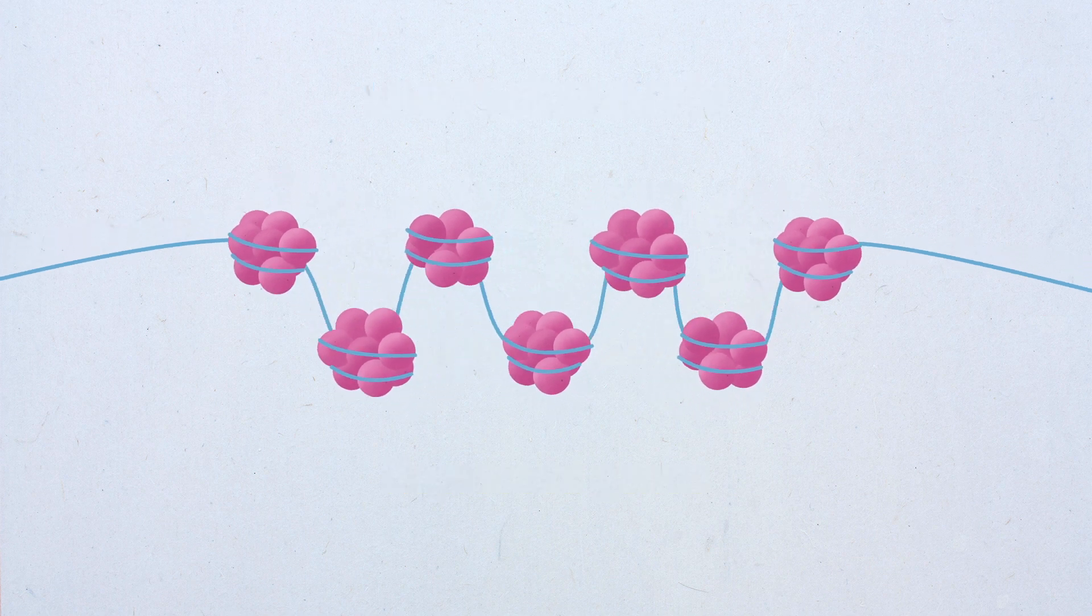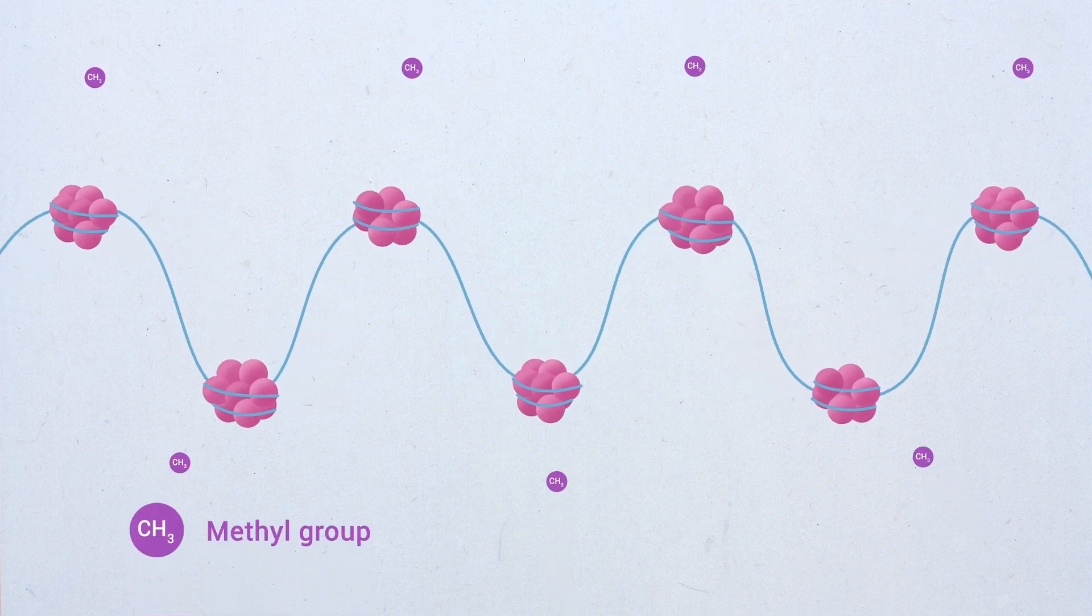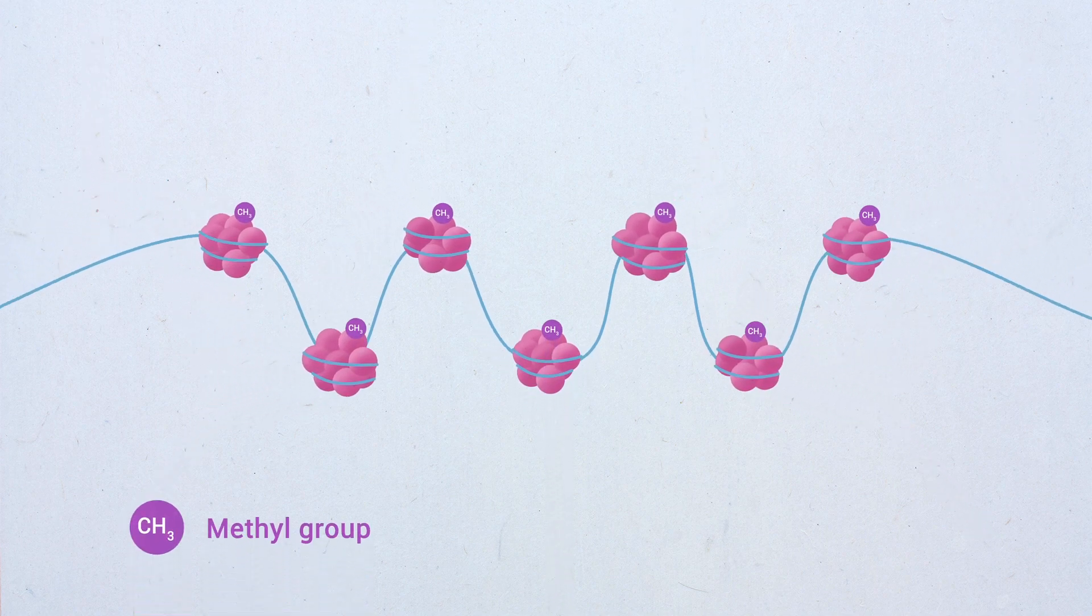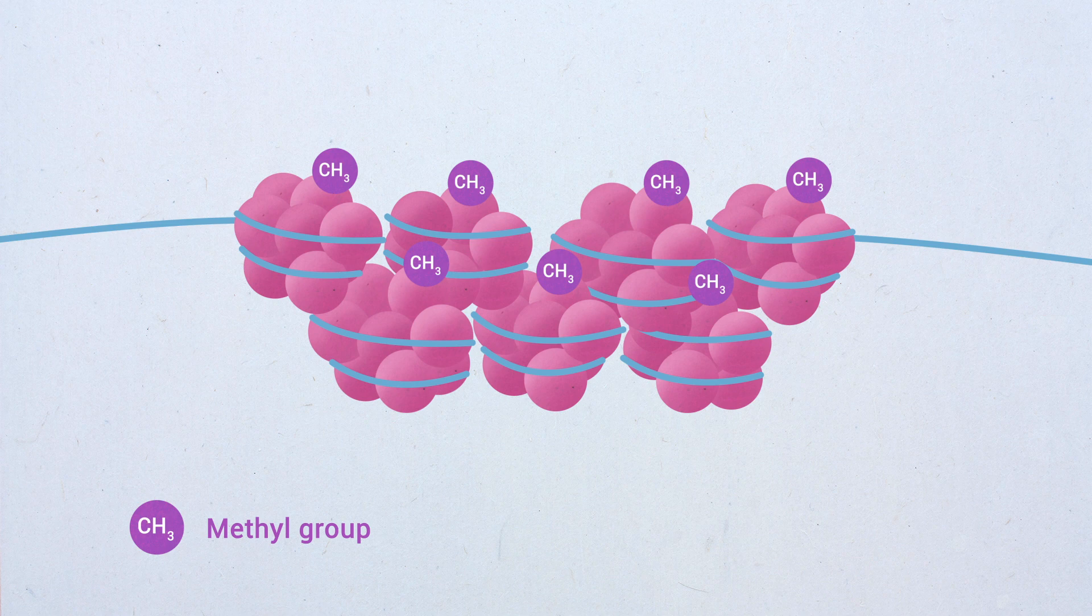How tightly DNA is packaged into chromatin can be changed by adding small molecules, such as methyl groups, to individual histones.